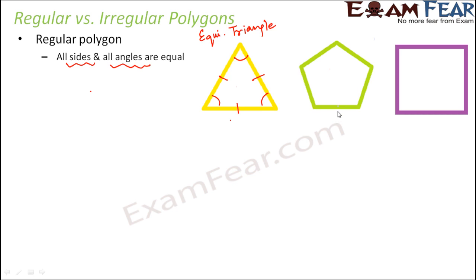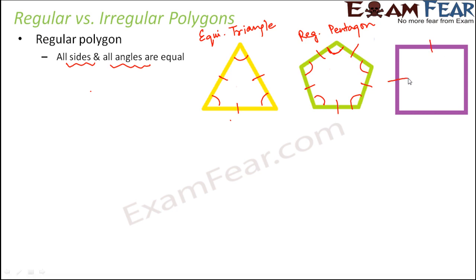Similarly, a polygon with five sides is called a pentagon. A regular pentagon has all sides equal and all angles equal, making it an example of a regular polygon. Think of a square — a square also has all its sides equal and all angles equal to 90 degrees. Therefore, a square is also an example of a regular polygon. Regular polygons always have all their angles equal and all their sides equal.